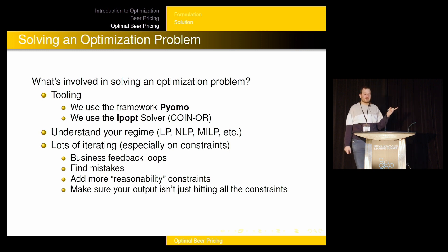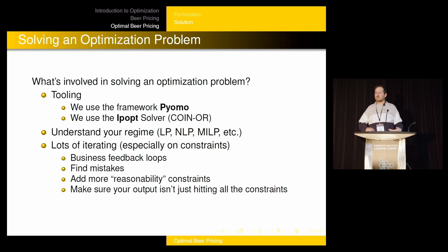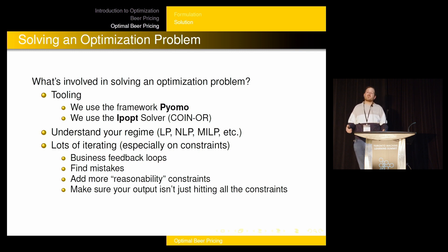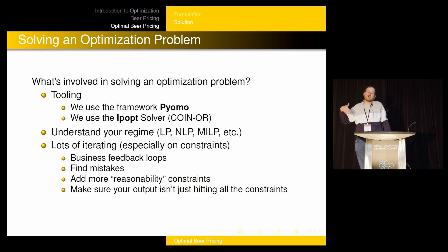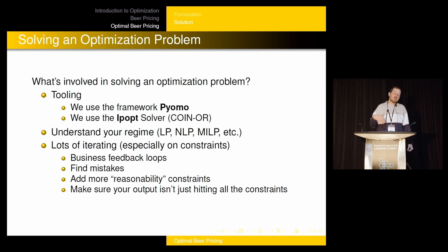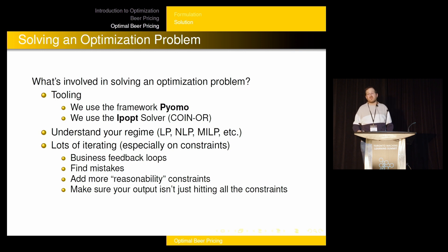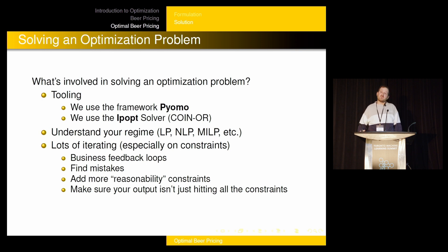Another thing you're going to need is lots of iterating — lots of business feedback loops where you go back to the business and say, here's my first pass at the output, what do you think? And they're going to say, the optimizer did something wrong — it set the price of this beer way lower than we would ever set it. Sure, it looks like we're going to make a lot of money, but we know something you don't — we've got business constraints. So we put another constraint in there, run it again, go back to them, and keep iterating. You have to have patience. You're going to do a lot of iterating with your business stakeholders and you're going to find mistakes and fix them.